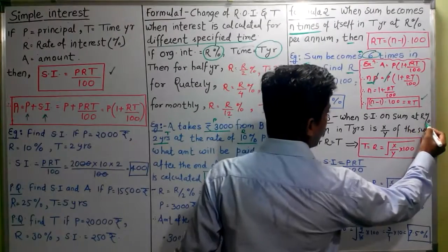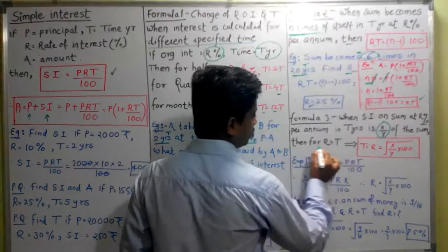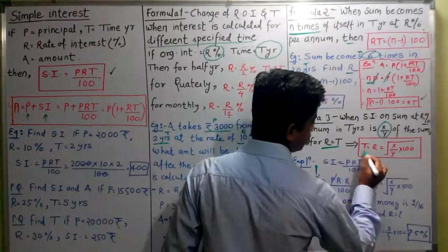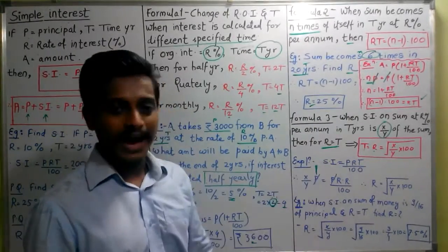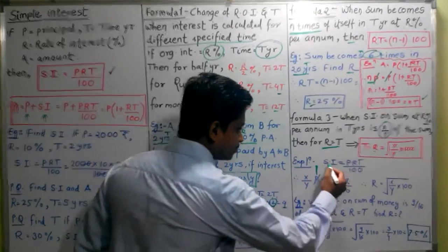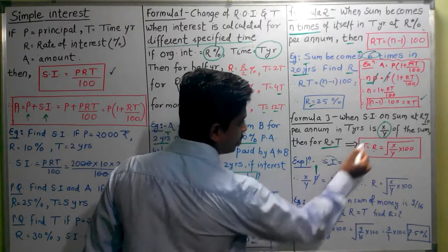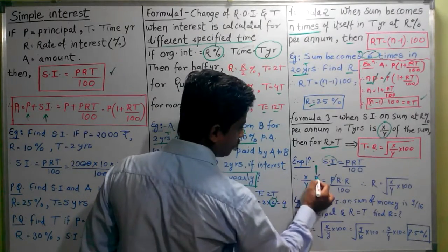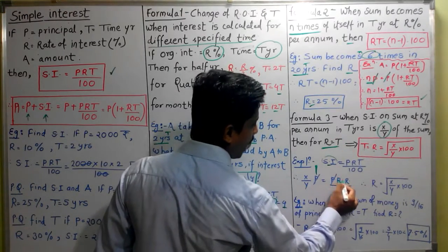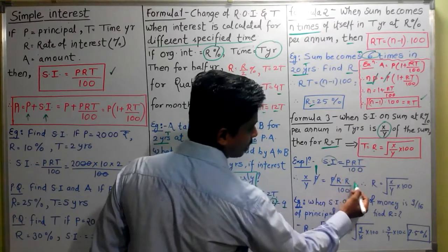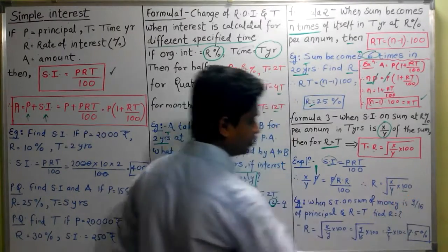Formula 3: When simple interest on sum at R percent per annum in T years is x upon y of the sum, then R equal to T equal to square root of (x upon y) into 100. Here's a small explanation. We have simple interest which is PRT upon 100. We are told simple interest becomes x upon y of sum. So x upon y of P which is equal to PRT. Here T and R values are the same. So R into T, we substitute R squared. P will get cancelled upon 100. Rearranging the terms, R equal to square root of (x upon y) into 100.